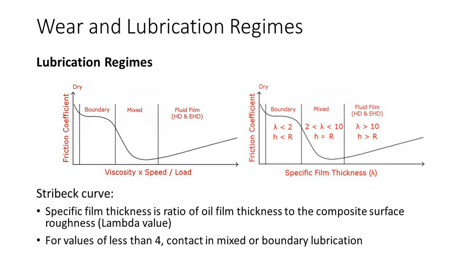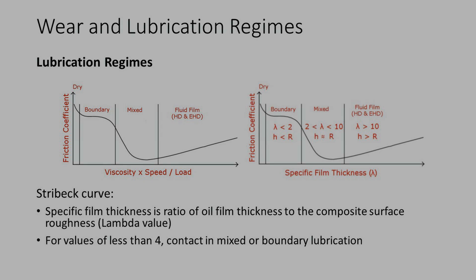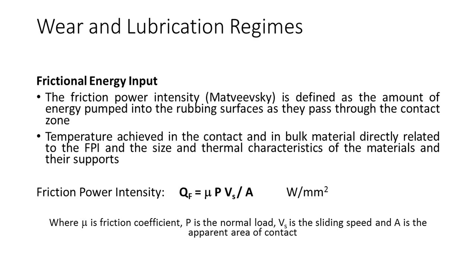The specific film thickness is the ratio of the oil film thickness to the composite surface roughness, otherwise known as the lambda value. For values of less than 4, the contact will be in either the mixed or the boundary regime — at the lower end of the Stribeck curve. The Friction Power Intensity is defined as the amount of energy pumped into the rubbing surfaces as they pass through the contact zone. The temperature achieved in the contact and in the bulk material is directly related to the FPI and the size and thermal characteristics of the materials and their supports. The FPI defines only the rate of energy generation and does not take into account the time scale over which this energy can be lost to the contacting materials.